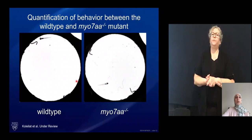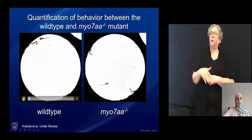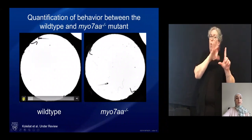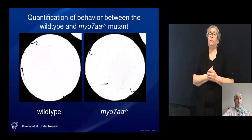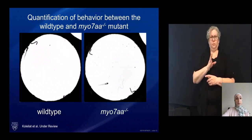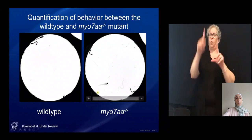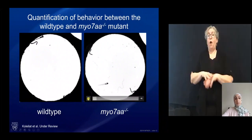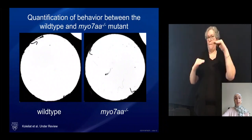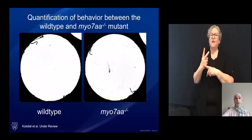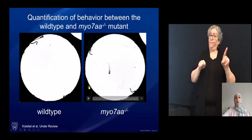These two videos represent swimming behavior from one swimming episode. On the left, a wild type animal responding to the stimulus is upright, with normal balance, and tends to swim to the perimeter of the well. The myo-7a mutant on the right is laying on its side due to balance abnormalities and has a very tight circular swim, which is very different from the wild type.